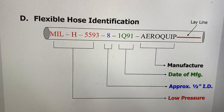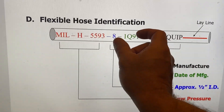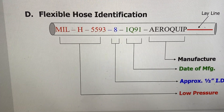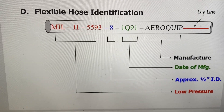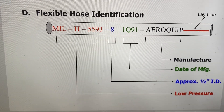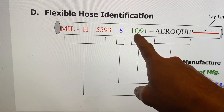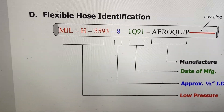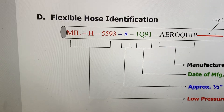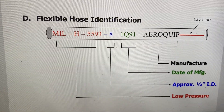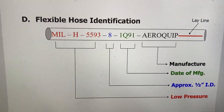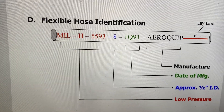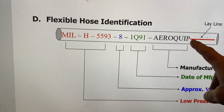Unlike rigid hose, which is measured by outside diameter. The next information, '1Q91', is the date of manufacture — it means first quarter of 1991, and we'll cover what that means shortly. The last piece of information, 'Arrow Quip,' is the manufacturer of the hose — that's just the company name of who made it.